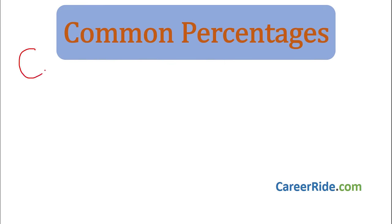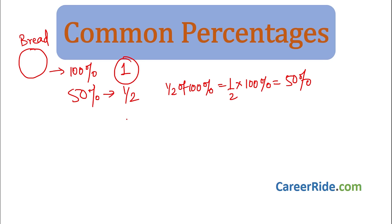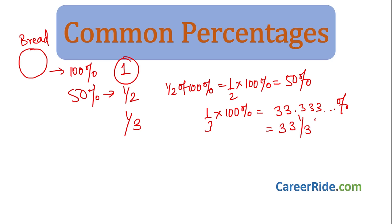Common percentages: consider a piece of bread — this whole thing is 100%. If someone says give me half a bread, that is half of 100%, which is 50%. So 50% means half. If someone says give me one third, then it would be 1/3 into 100%, that is 33.333...% or 33 and 1/3 percent. So 33 one-third percent is nothing but one third of the object.